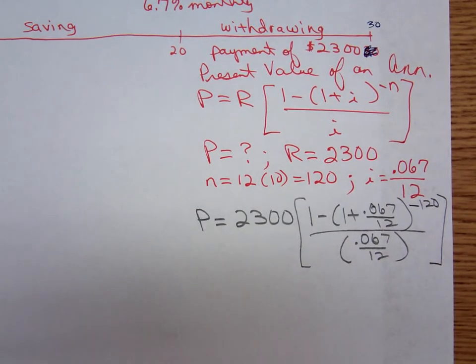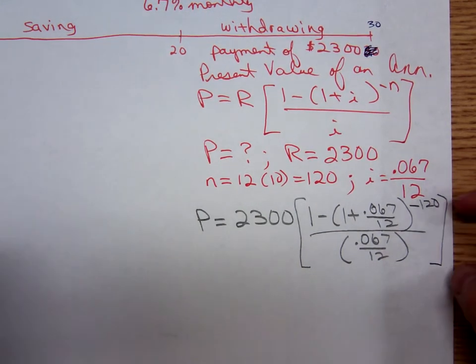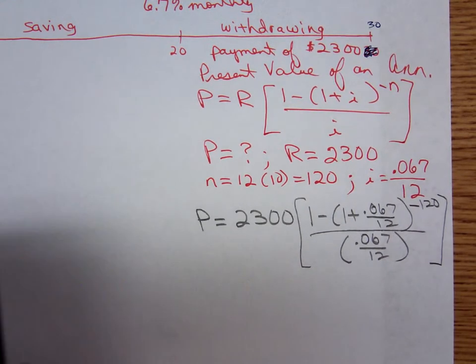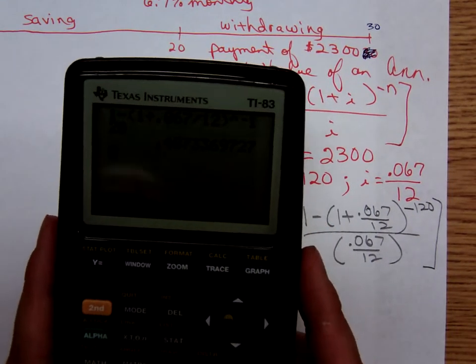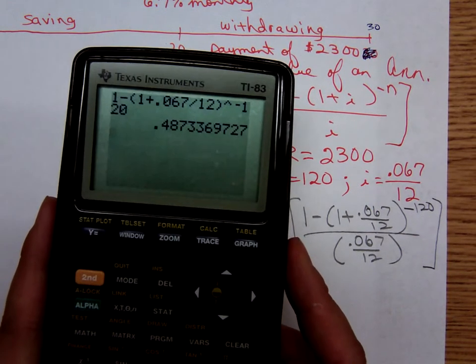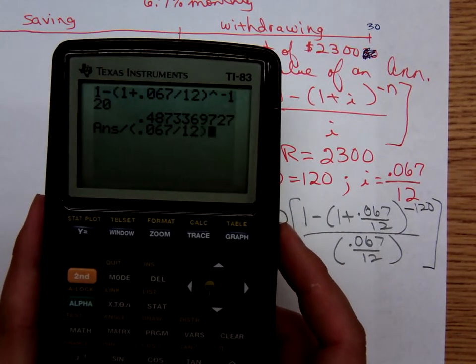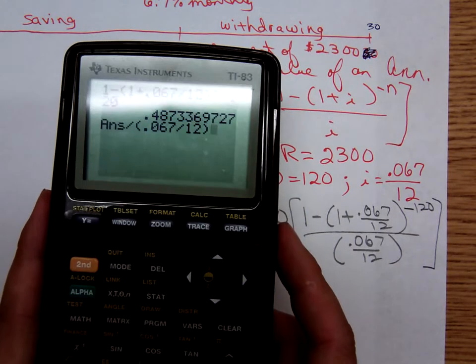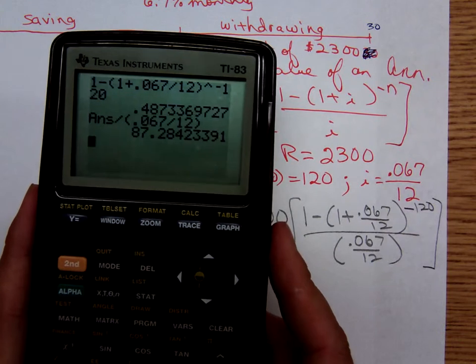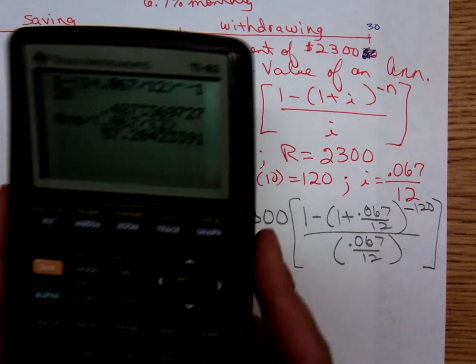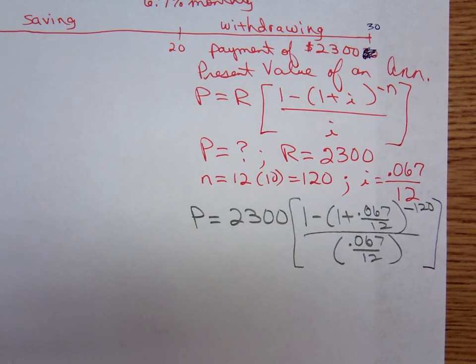I don't do anything real fancy when I'm punching this stuff into my calculator. I simplify the bracket amount and then I'll multiply by 2300. So I have 1 minus 1, there's the numerator. And then I have to divide that by .067 divided by 12. Notice the way I enclose those parentheses, the i-value in parentheses. It's giving me that. And then I have to multiply it by 2300.